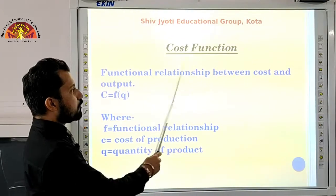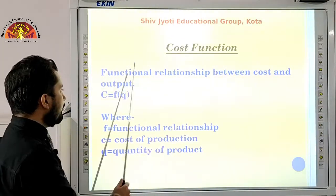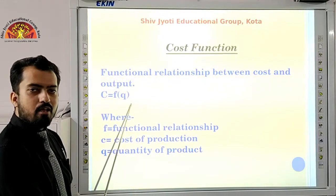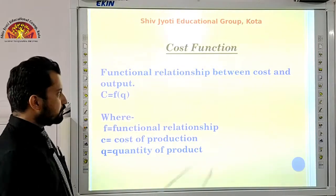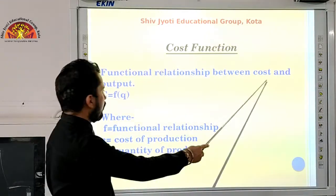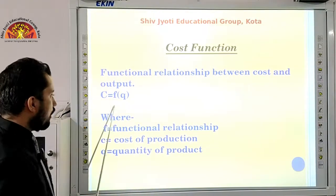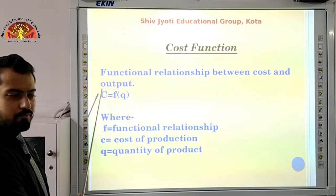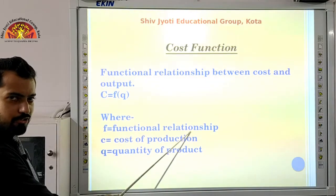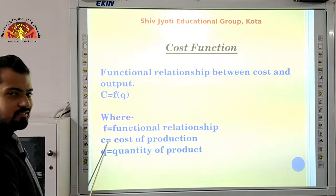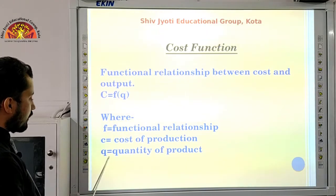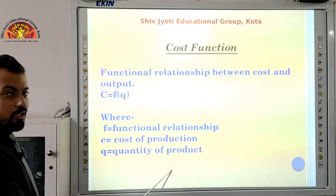Second, we have the cost function. The cost function is the functional relationship between cost and output. It is written as C = F(Q), where F is the functional relationship, C is the cost of production, and Q stands for the quantity of the product.